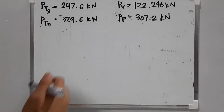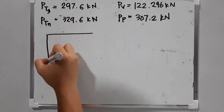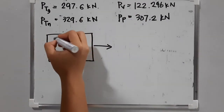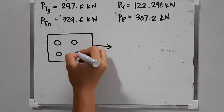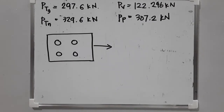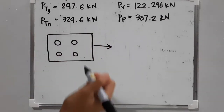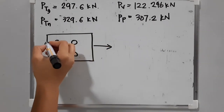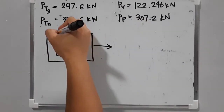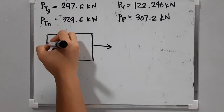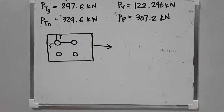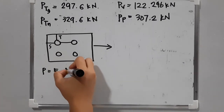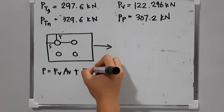For block shear or shear rupture, when the path direction is parallel to the force that is shear, and when it is perpendicular that is tearing. Block shear is the combination of shearing and tearing. The force equals the allowable shear stress times the shear area plus the allowable tearing stress times the tearing area. Allowable shear stress is 0.3 of Fu, and allowable tearing stress is 0.5 of Fu.